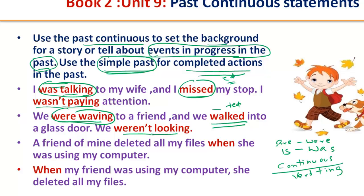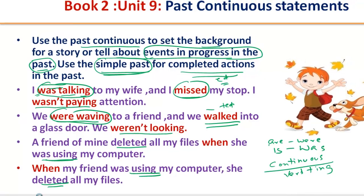'We weren't looking' — contraction for 'we were not looking.' 'A friend of mine deleted all my files when she was using my computer' — 'was using' is past continuous and 'deleted' is simple past. So for past continuous, we use -ing with the past form of the verb 'be,' and for simple past we add -ed.